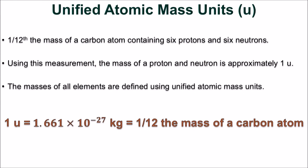An accepted unit of measurement is the Unified Atomic Mass Unit, or U. It is defined as one twelfth the mass of a carbon atom, which contains six protons and six neutrons. Using this measurement, the mass of a proton and neutron is approximately one U.